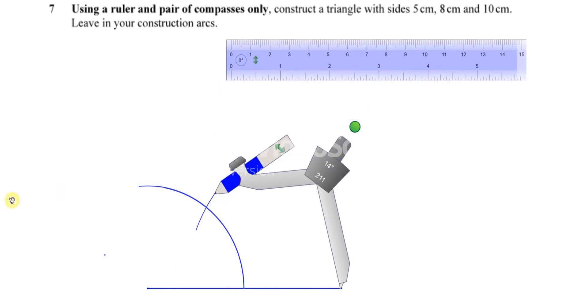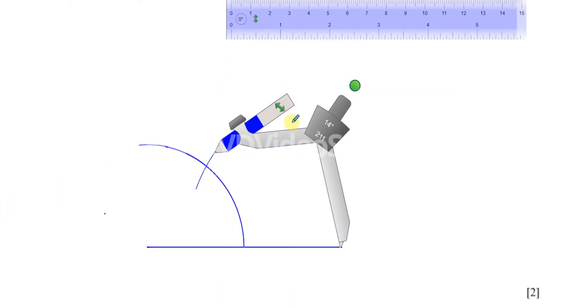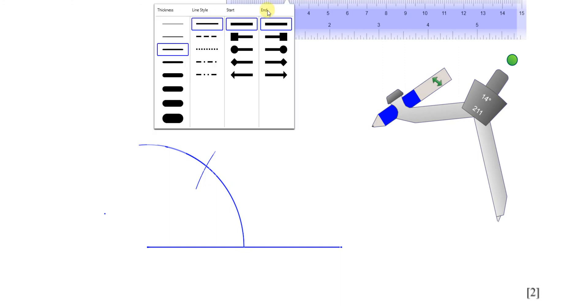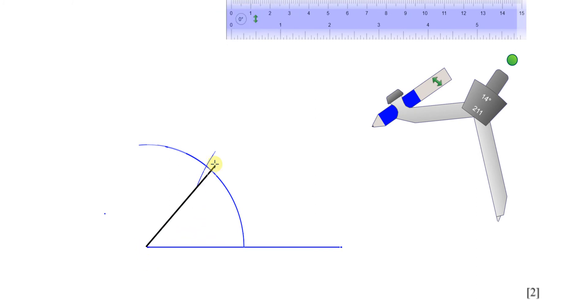So now what I have is this situation where I know that this is exactly the point where the two lines meet. So I can join this point to there and join this point to there and join this point to there. And I have my line, my triangle.